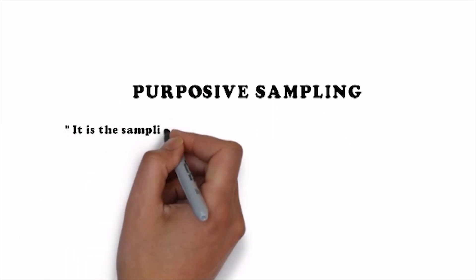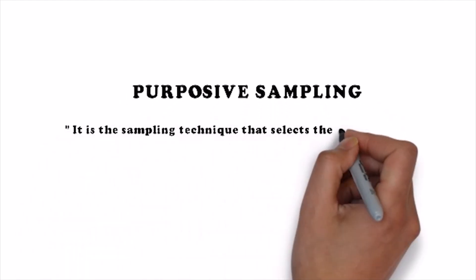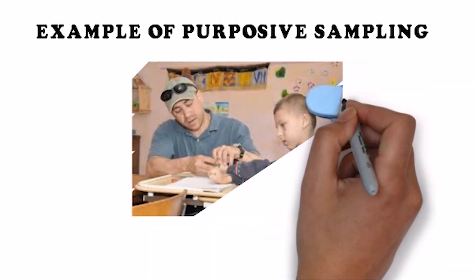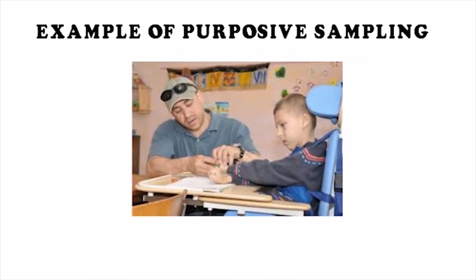Purposive sampling is the sampling technique that selects people with the characteristics needed for the research. It is also called judgmental sampling. For example, if we want to find out the number of children aged 6 to 20 years with cerebral palsy (CP) in a city in order to predict results for the whole country, we would go only to those children who have CP, or to hospitals where CP children go for treatment or education, and select all children between the ages of six and twenty.